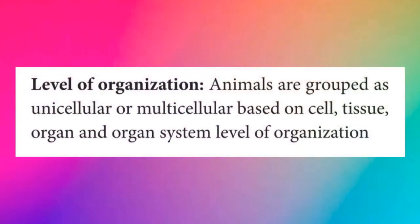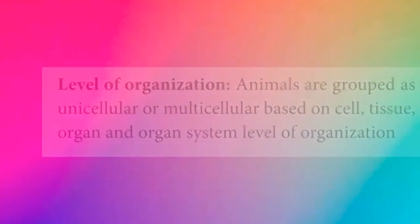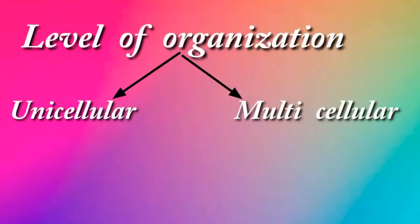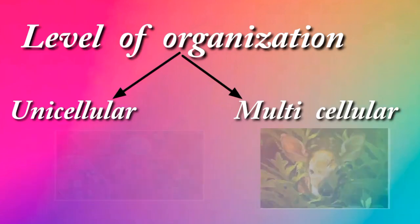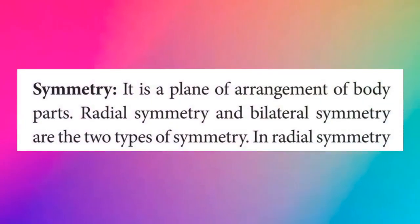Number 1: Level of organization. Animals are grouped as unicellular or multicellular based on cell, tissue, organ, and organ system level of organization. Unicellular organisms — the whole organism is a single cell; example, amoeba. Multicellular organisms are formed by a group of cells.